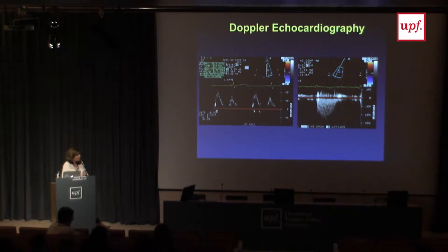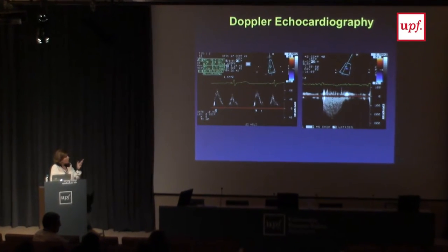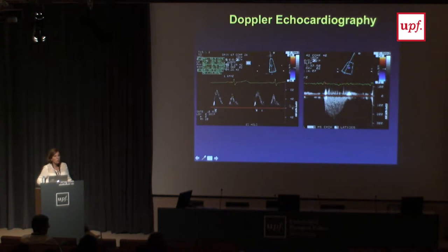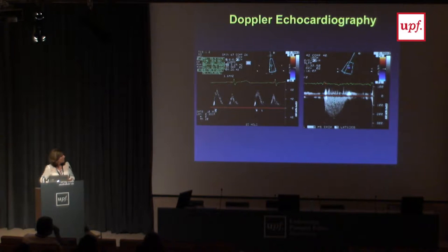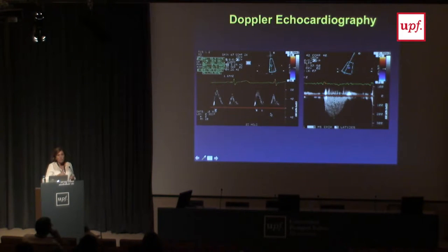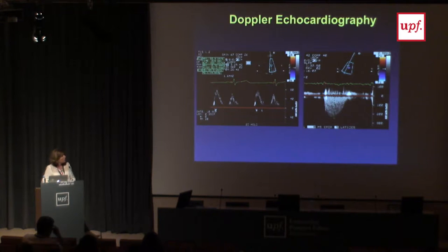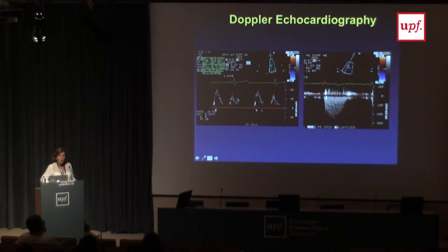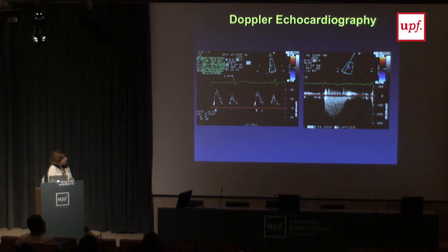We can also apply Doppler to the tissues. For example, we can use pulse wave Doppler to see how fast or slow blood enters the left ventricle — this gives us a lot of information. We have an early passive filling of the heart, and just looking at the velocity of this wave and at the speed of deceleration, we can infer information about the stiffness of the ventricle and whether it is overloaded or underfilled. There is also the A wave due to atrial contraction, which gives information about ventricular compliance and atrial function.